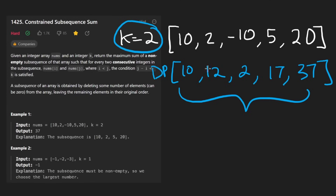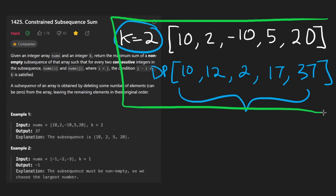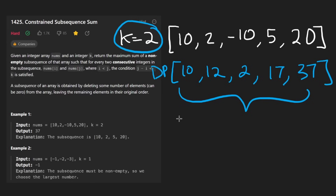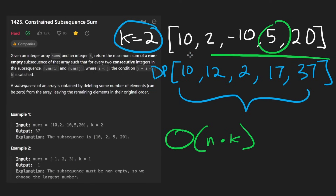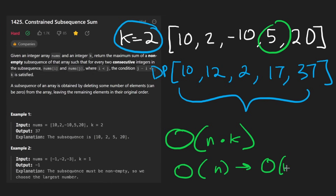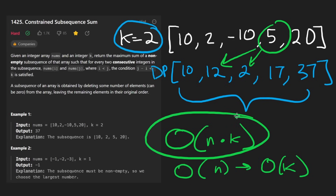The downside with this solution is that while it works, it's almost too easy, and that's why it gets time limit exceeded. The overall time complexity is O(N) for iterating, but for every element we might have to look at the K previous values in the DP array, so the time complexity becomes O(N × K). Space complexity for the DP array is O(N), though we could optimize it to O(K) since we only need the K previous elements — but I won't make that optimization because this won't pass anyway.